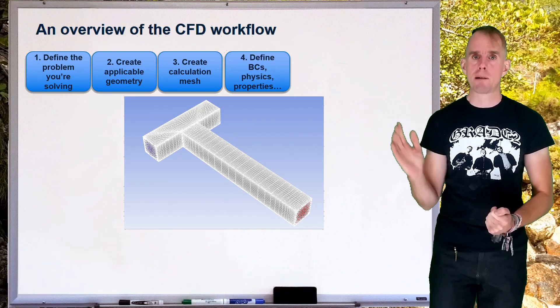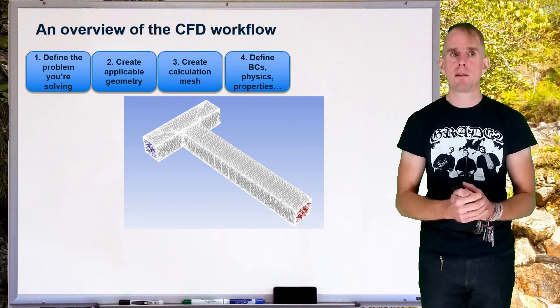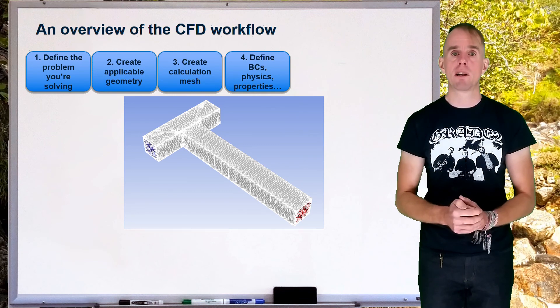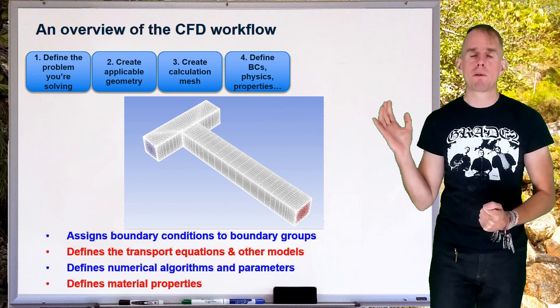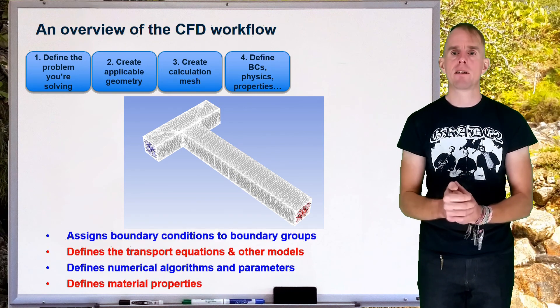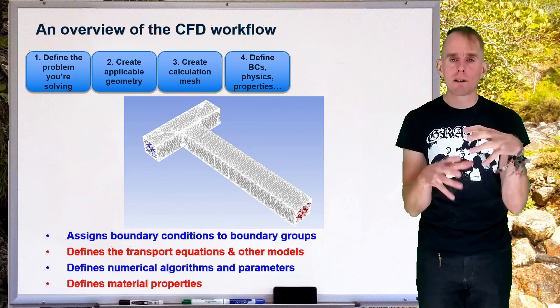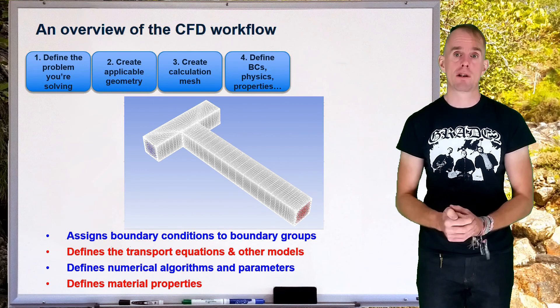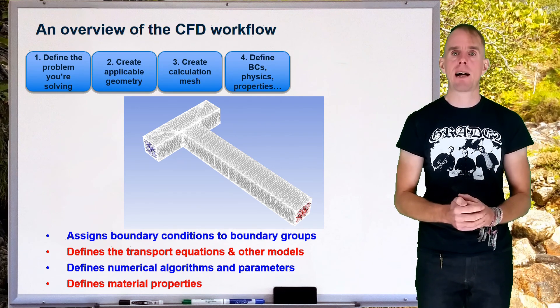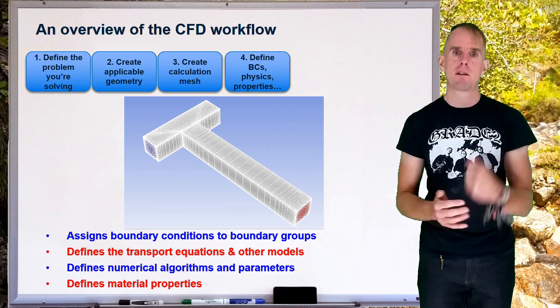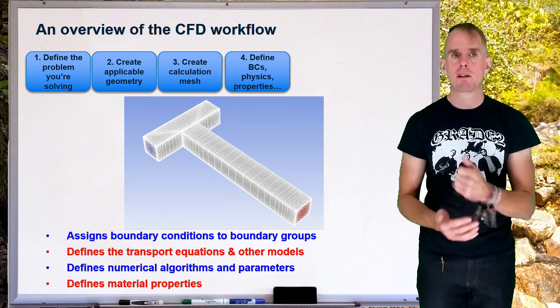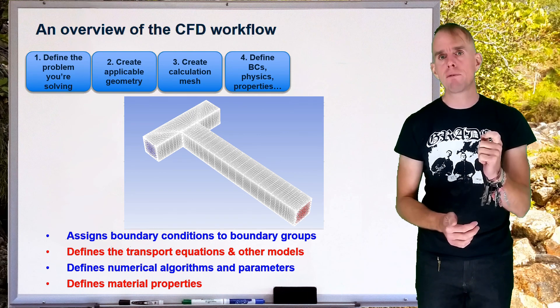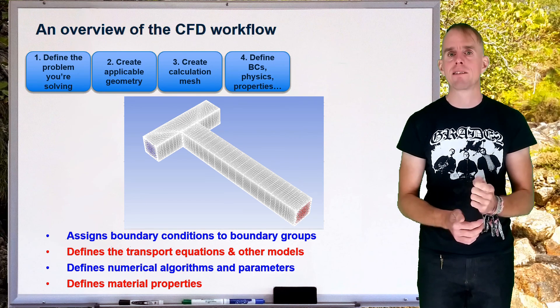And so what we find is that those boundary groups that we've already defined now get assigned a meaning. So, for example, all those surfaces that represent a solid wall within our physical geometry may be applied a no-slip boundary condition. Or we may have an inlet being defined as a constant volumetric flow rate boundary condition. Or an outlet being a constant pressure boundary condition. The exact mathematical nature of the boundary condition is very important to understand because it has a very strong effect on the results of your simulation. More details of that in lecture three.